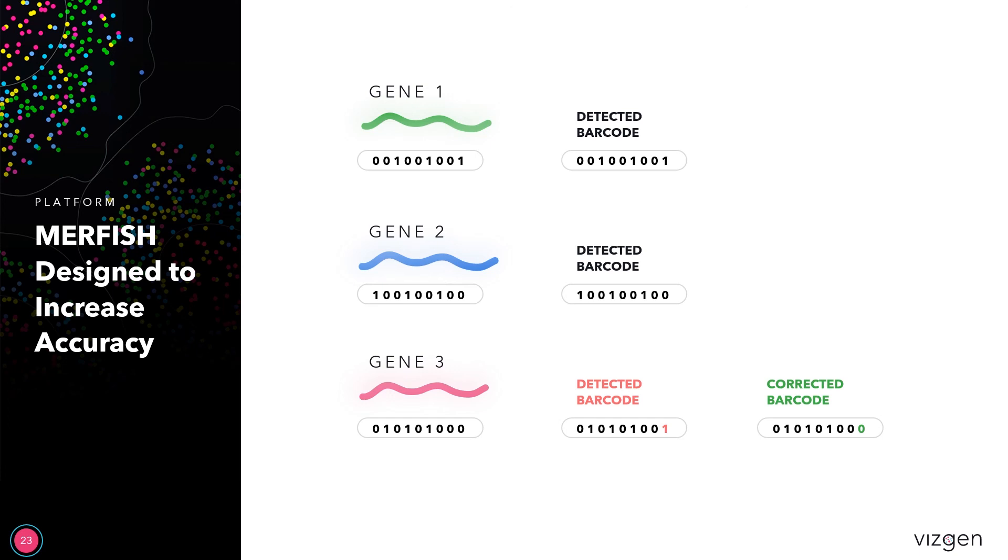As you can see here in this example, where in gene three, the detected barcode, the last bit is a one. However, since there is no barcode that has this same code, it will look for the closest one to it, which would be the gene three, and correct its barcode in that way.